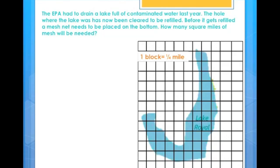The EPA had to drain a lake full of contaminated water last year. The hole where the lake was has now been cleared to be refilled. Before it gets refilled, a mesh net needs to be placed at the bottom of the lake. How many square miles of mesh is needed?